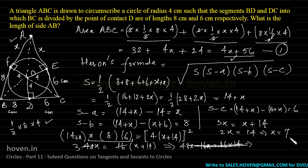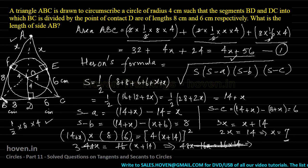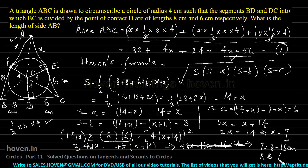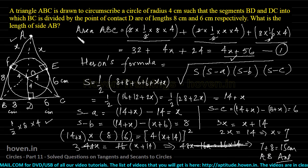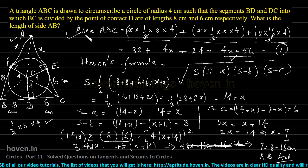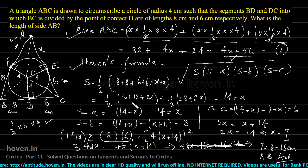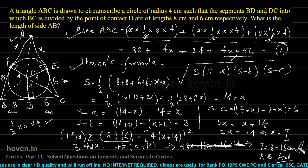Since x = 7, the length of side AB = 7 + 8 = 15 cm. In this question, we found the area of triangle ABC in two different ways: first by splitting into six smaller triangles, and second using Heron's formula. Equating the two expressions and solving gave the answer 15 cm.